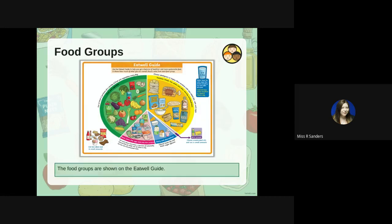Food groups are shown on the Eat Well Plate, which is also government guidance. Here's our plate — this is what it should look like when we're preparing dinners. A big section should be fruit and veg, an equal-sized section for carbohydrates, a little bit of meat, a little bit of dairy and alternatives, and a tiny bit of oils and spreads.